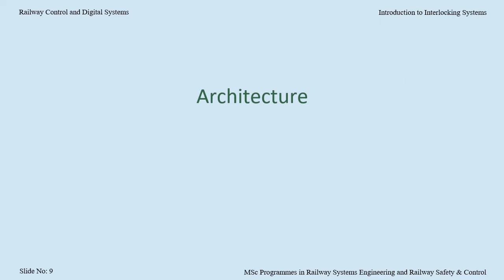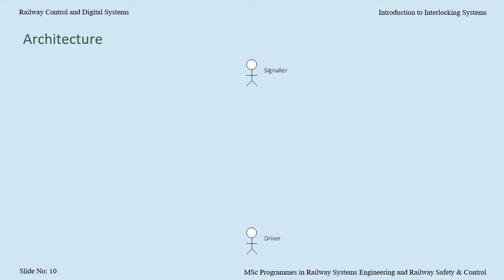How does the interlocking fit into the railway control system architecture? A railway control system allows the communication of movement authorities from a signaller to a driver. The signaller could be a human, or it could be some type of automation, such as an automatic route setting system. The driver could be a human, or it could be some type of automation, such as automatic train operation.